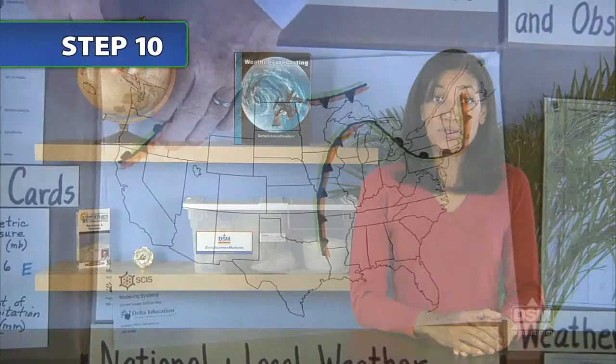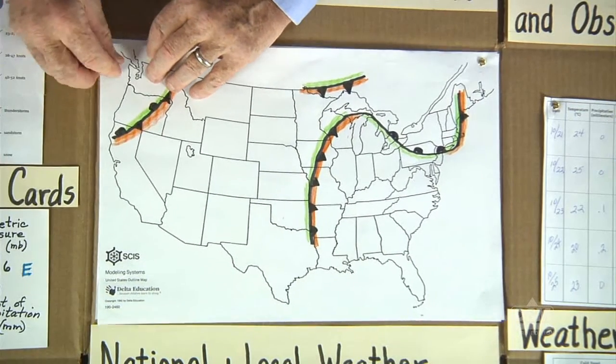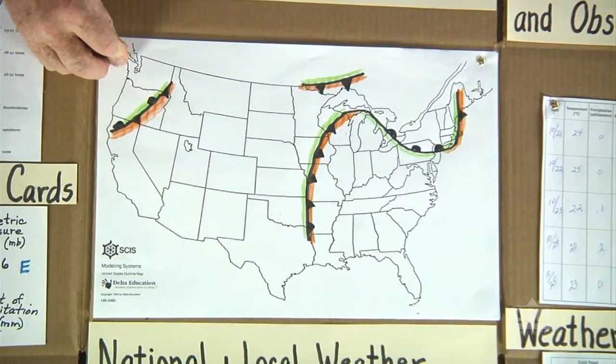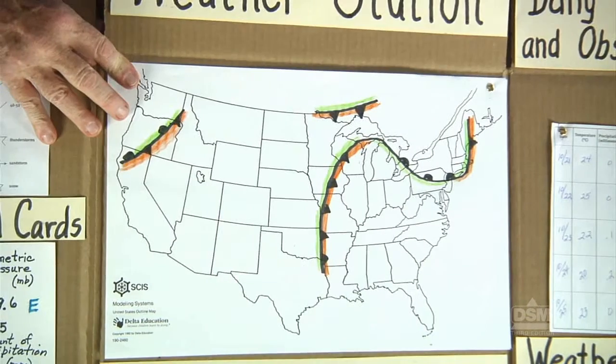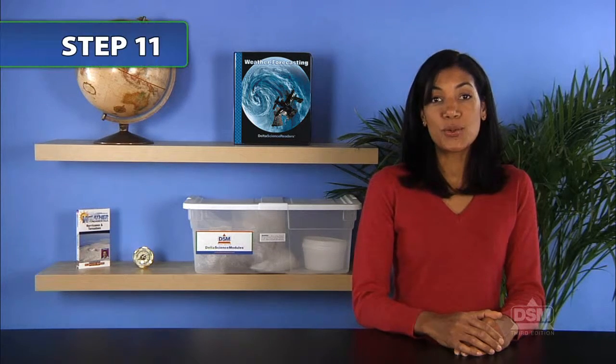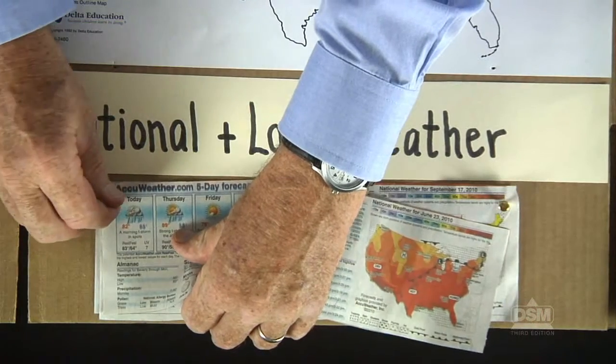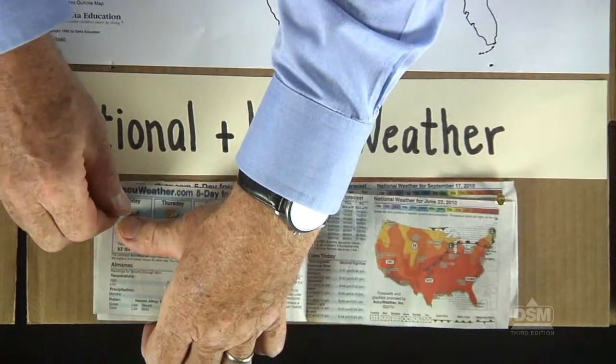Ask students to transfer daily national weather data on isotherms and isobars to a new outline map every day. Each new outline map should be secured over the preceding day's map. In this way, students can refer to previous days' maps as they track the movement of air masses. Have students secure the latest weather report on top of the others in the bottom center of their weather stations.